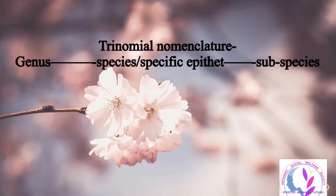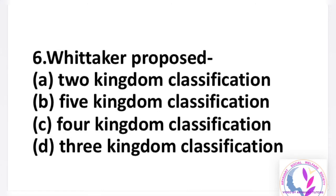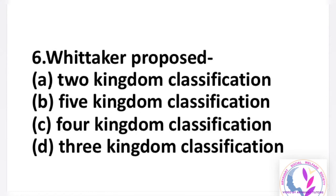Question number 6: who proposed the five-kingdom classification? Option A: 2-kingdom classification, B: 5-kingdom classification, C: 4-kingdom classification, D: 3-kingdom classification. The answer is B, five-kingdom classification. According to R.H. Whittaker in 1969, he proposed a five-kingdom classification: first Monera, second Protista, third Fungi, fourth Plantae, and fifth Animalia.